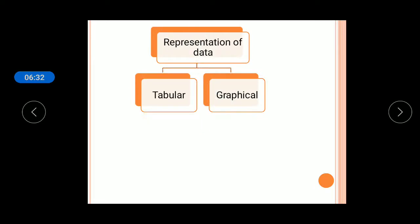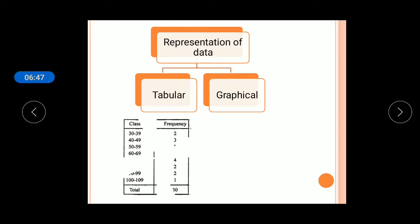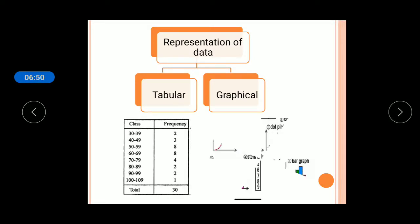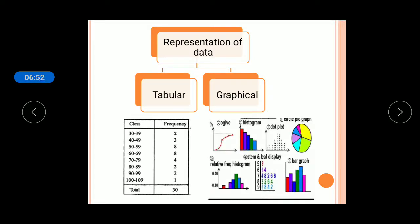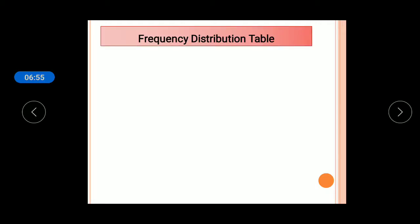Representation of data can be done in two ways after collection: tabular representation and graphical representation. Tabular means representing in the form of tables, and graphical means representing with the help of graphs.